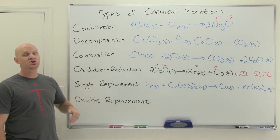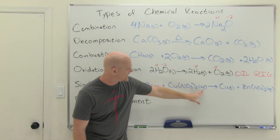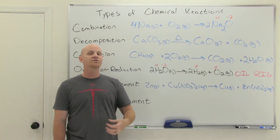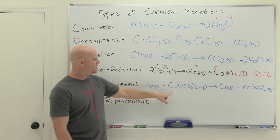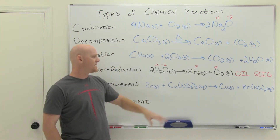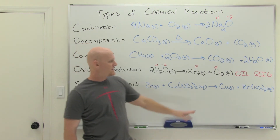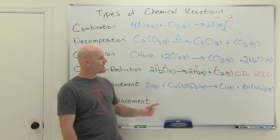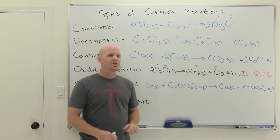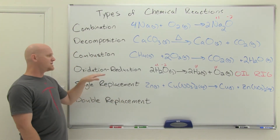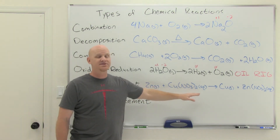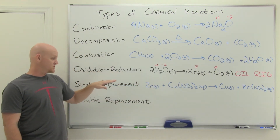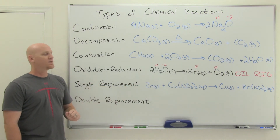Single replacement reactions are aqueous reactions — the AQ symbol indicates it's dissolved in water. When you take a solid piece of zinc and put it in an aqueous solution of copper nitrate, you'll find the zinc dissolves into the solution and the copper comes out. You can actually see the silvery zinc disappearing and the copper-colored copper coming out. We'll study these more in the next lesson on oxidation-reduction reactions.